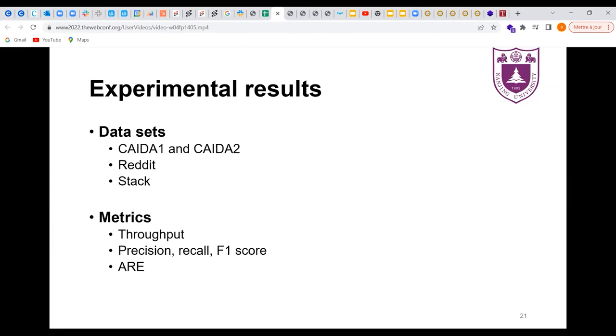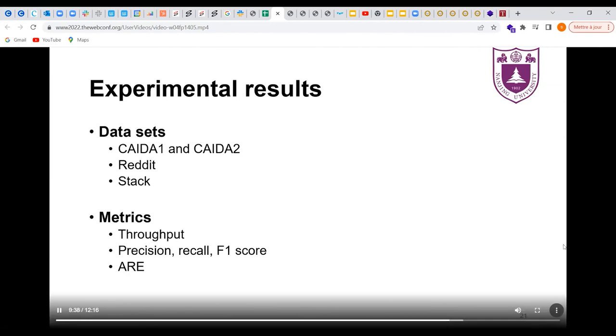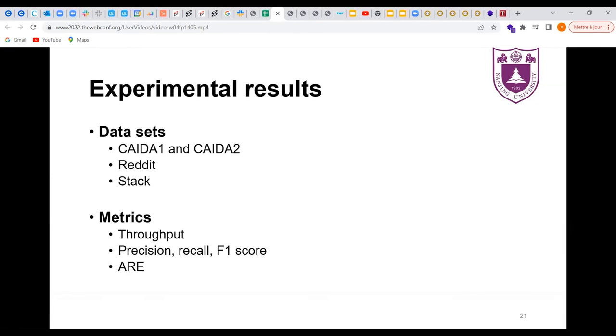Next, let's turn to the experimental part. We use four real-world datasets. The first two are traffic traces from CAIDA, CAIDA high-speed monitor. Reddit is the dataset from the social network Reddit hyperlink network. The subreddit to subreddit hyperlink network is extracted from the posts that create hyperlinks from one subreddit to another. And Stack is the dataset from Stack Overflow Temporal Network, which is a network of interactions on the Stack Exchange website.